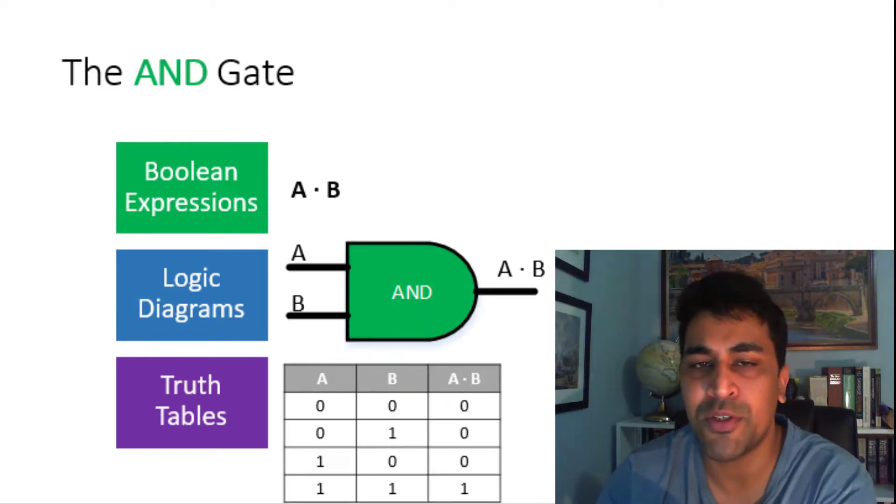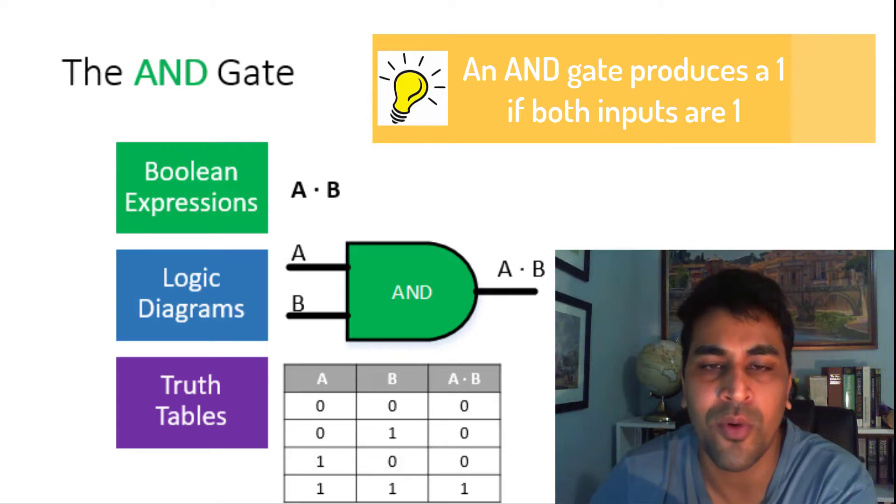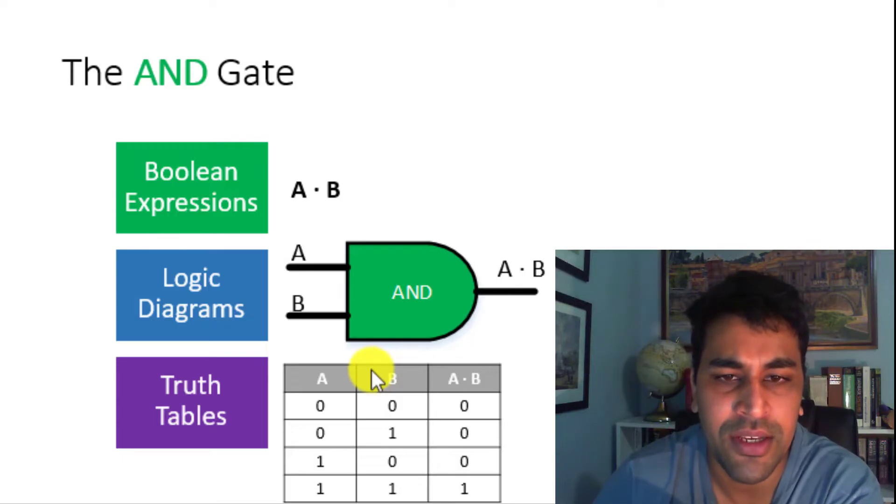The AND gate produces a 1 if and only if A and B are both 1. Here is the Boolean expression for an AND gate, where A and B are both binary variables. This is the symbol for the AND gate. The truth table lists every possible combination of input for A and B, and shows what the output for the gate would be. As an example, if A is 0 and B is 1, then A and B would be 0. If A is 1 and B is 1, then A and B would be 1.